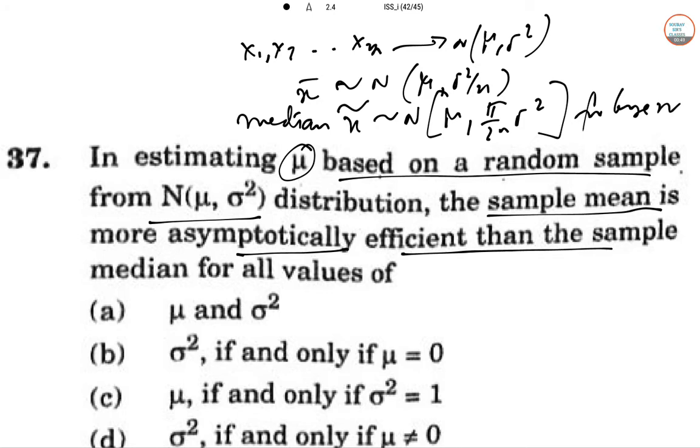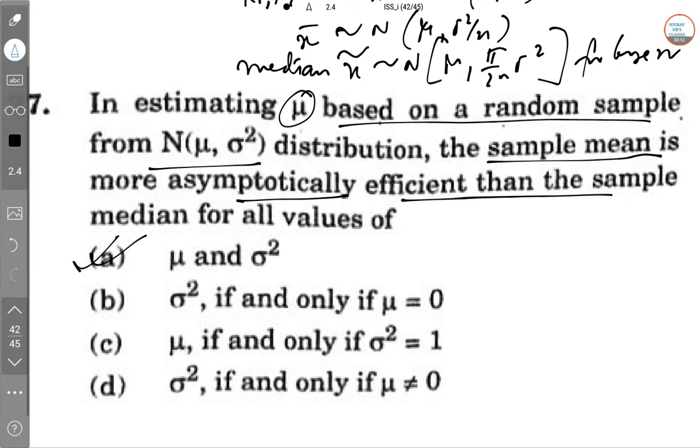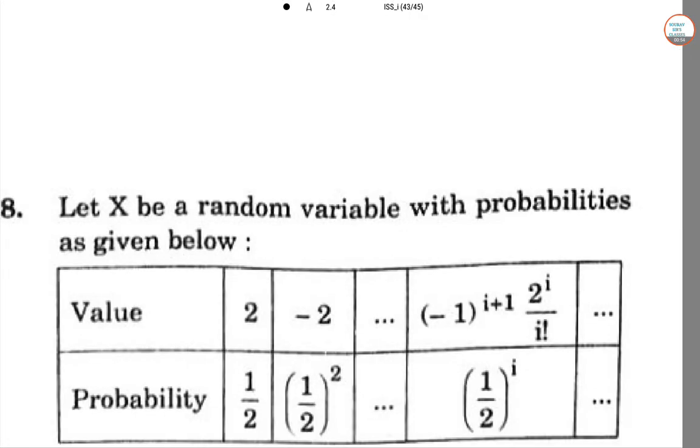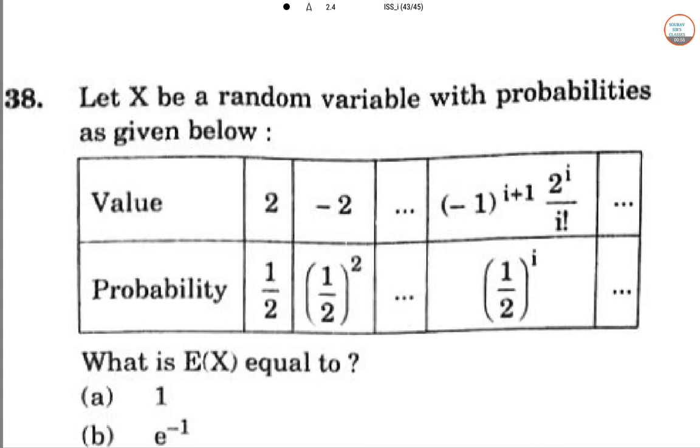So for large n, the sample mean is more efficient than the sample median. Obviously, option number 1 is correct. Next, question 38.